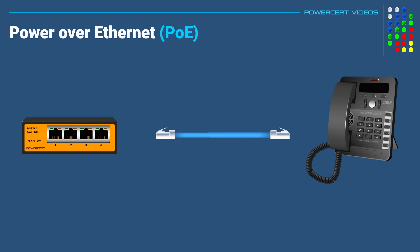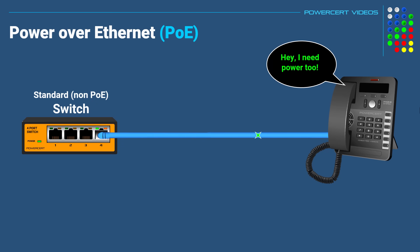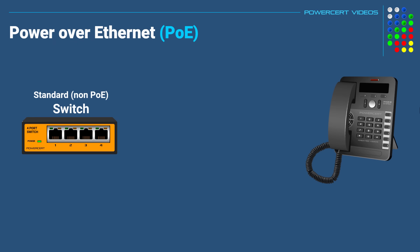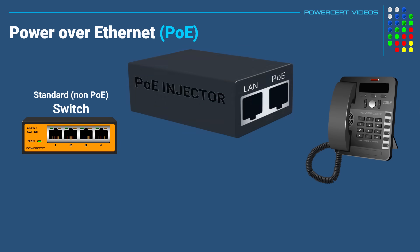Now, what if we plug this ethernet cable into a standard non-PoE switch? Nothing would happen, because this IP phone needs both data and power to function, and this standard switch can only transmit data through the cable and not power. However, there is a way to transmit both data and power to this IP phone without replacing the switch, and that is by using a PoE injector.